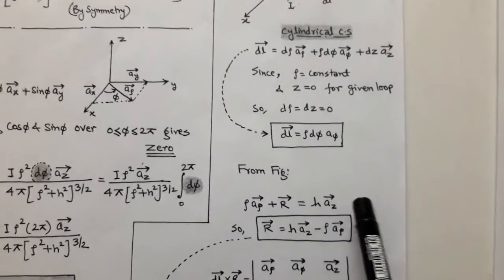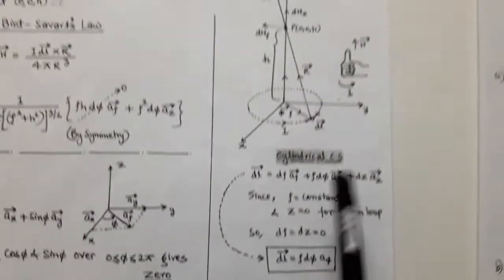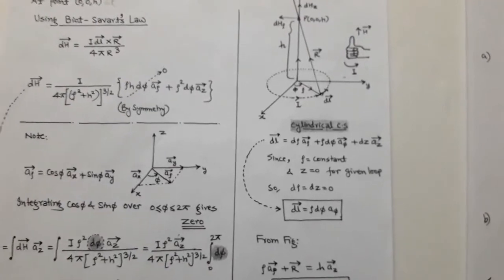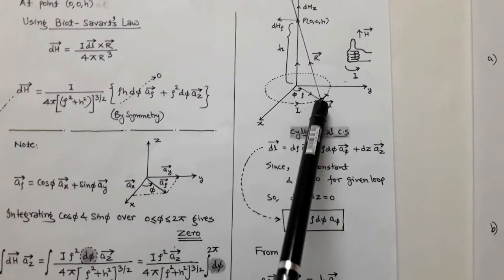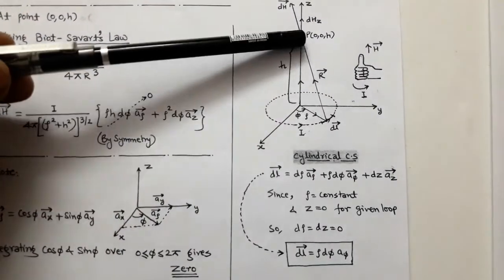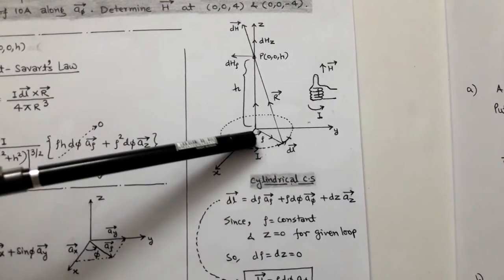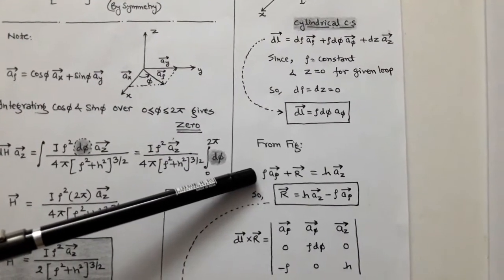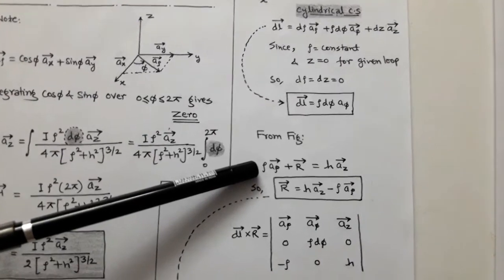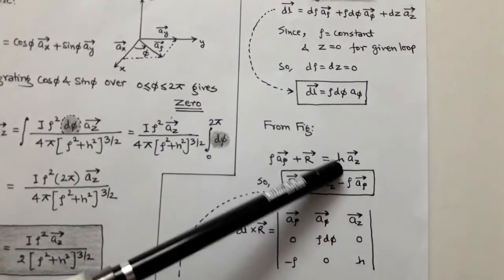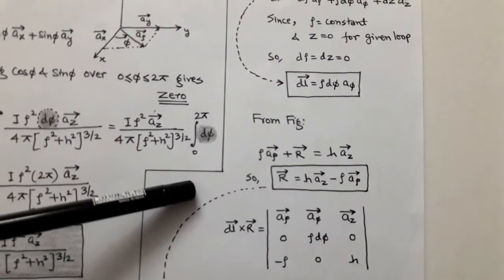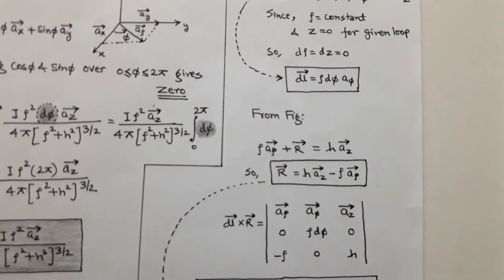To determine the vector r, we use vector addition from the figure. The position vector of the source point plus r vector equals the position of point P along the z-axis. So: ρ â_ρ + r vector = h â_z. Therefore, r vector = h â_z − ρ â_ρ, where h is the magnitude along unit vector z (positive direction).